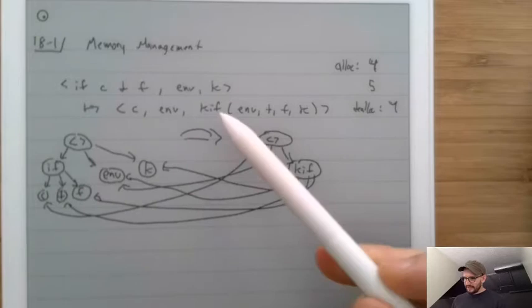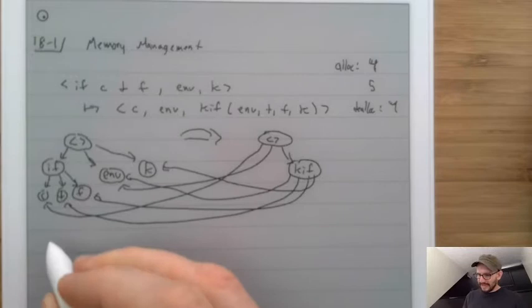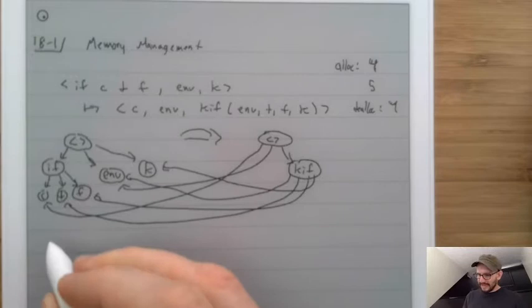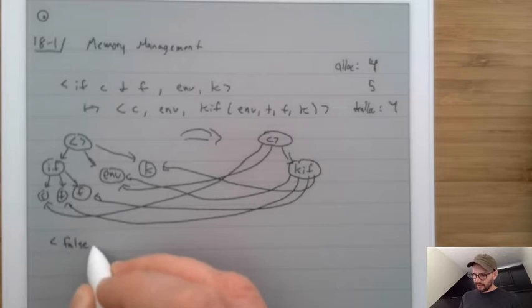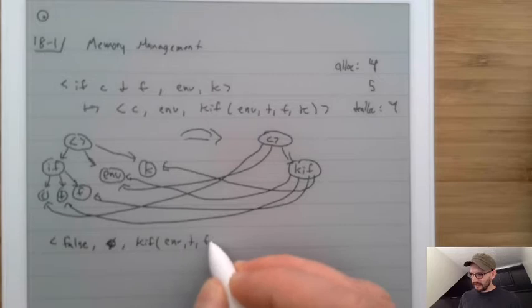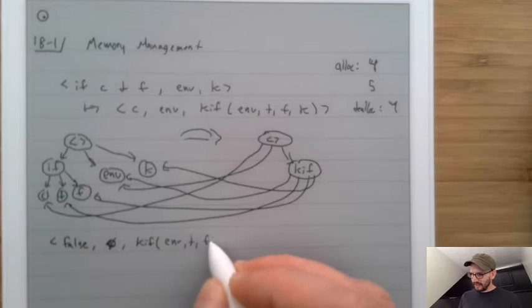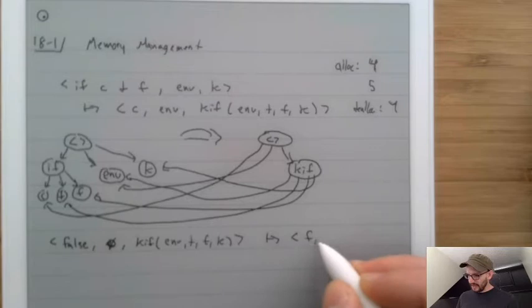Essentially what happens is we are allocating this kif. What happens when that kif is finally gone? Let's look at the rule where we get a false and we have an environment — which we know is the empty environment — and a kif containing an environment, t, f, and k. This transitions to f, the saved environment, and k. What does that look like in terms of data structures?